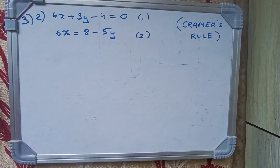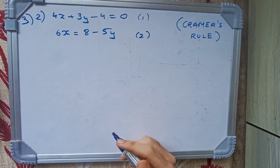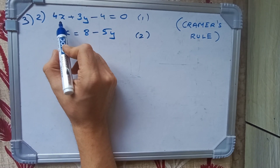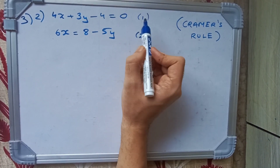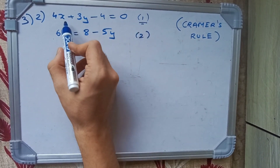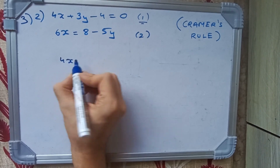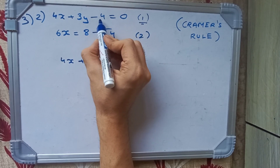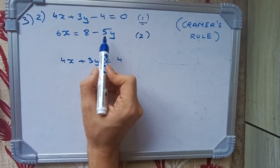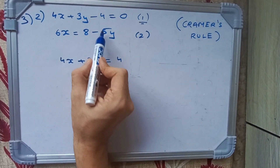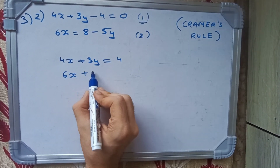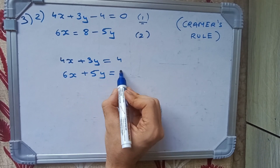Hello guys, welcome back to Part 2 of Cramer's Rule. We are going to start with the second sum. We have 4x + 3y - 4 = 0 as equation 1, and 6x = 8 - 5y as equation 2. We rearrange: equation 1 becomes 4x + 3y = 4, and equation 2 becomes 6x + 5y = 8.